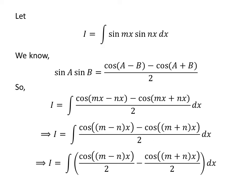The integrand can be expressed as the difference of two fractions. So, I is equal to the integral of cos((m − n)x) upon 2 minus cos((m + n)x) upon 2, with respect to x.